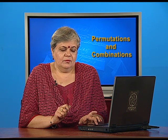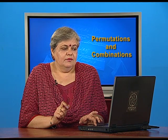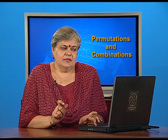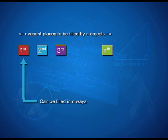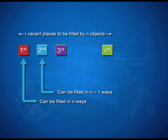Where is this result coming from? We are looking at arranging n different objects taken r at a time, so we can think of it as r places to be filled by n objects. The first place can be filled in n ways. Since objects do not repeat, the second place can be filled in n−1 ways, as one object has already taken the first position.